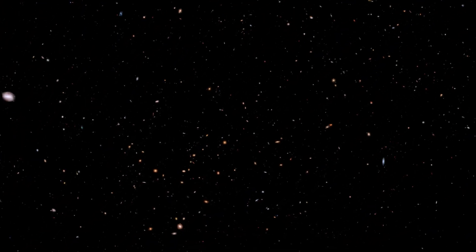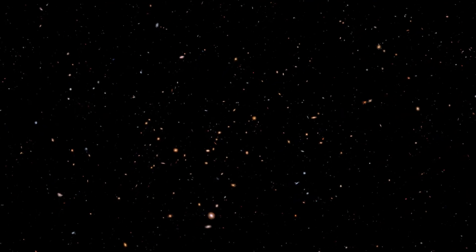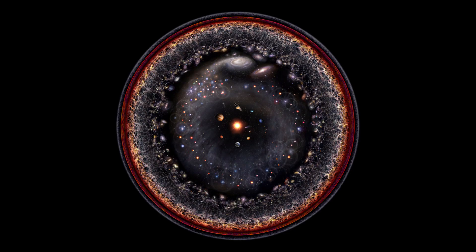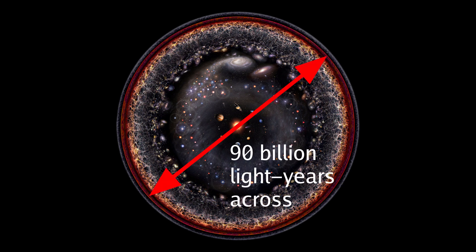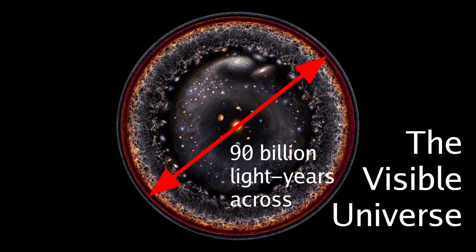The furthest we can see is 45.7 billion light years from Earth. The region that is visible to us forms a sphere around the solar system that is 90 billion light years across. This is known as the visible universe.